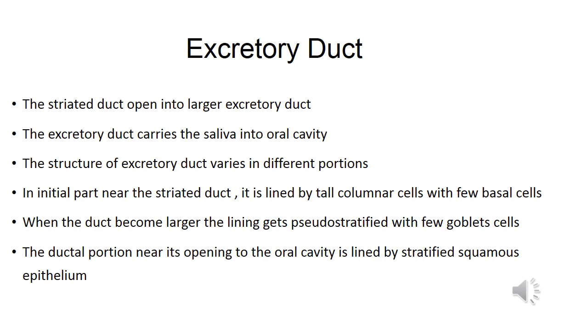When the duct becomes larger, the lining gets pseudostratified with few goblet cells. The ductal portion near its opening to the oral cavity is lined by stratified squamous epithelium.